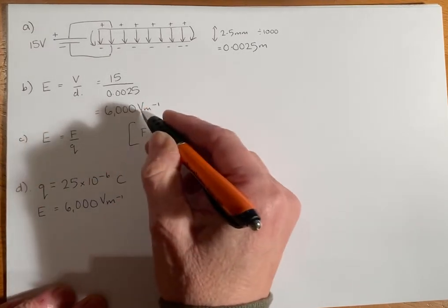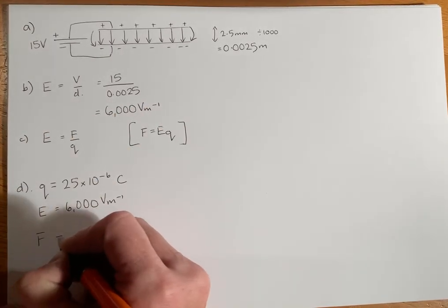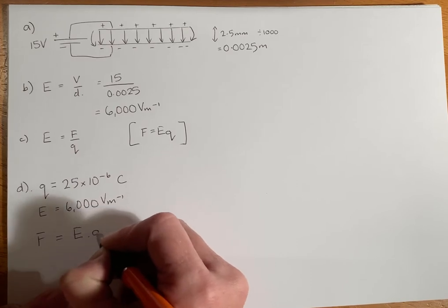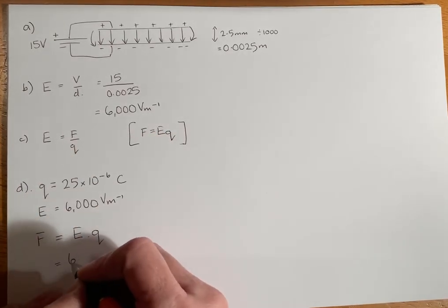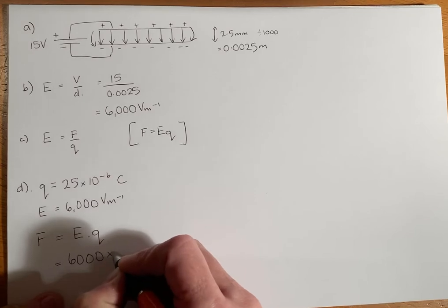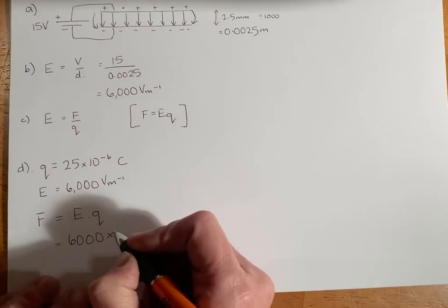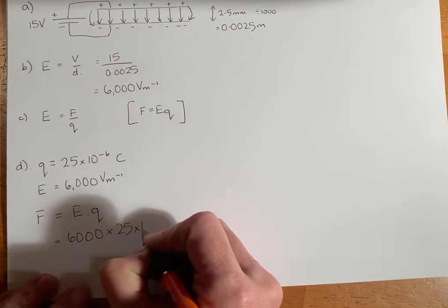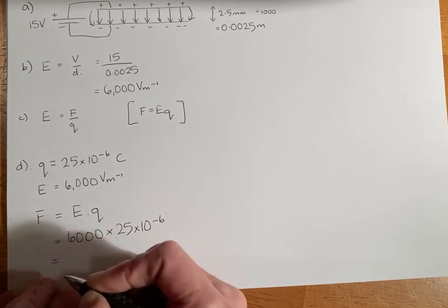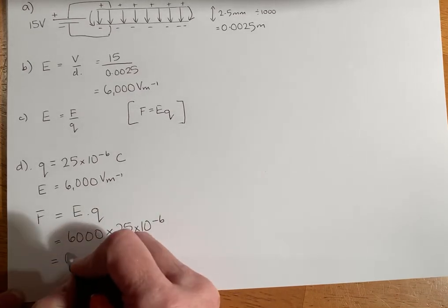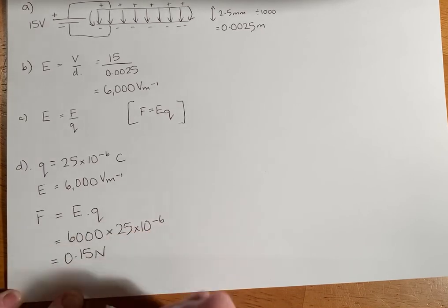6,000 volts per meter, and the force is E times Q from this equation here. So that's 6,000 times 25 times 10 to the minus 6. And when you put all that into your calculator, you get 0.15 newtons.